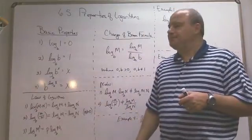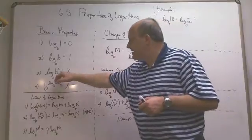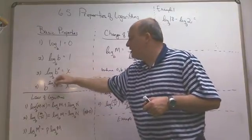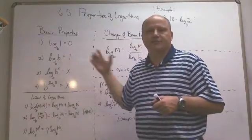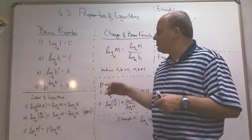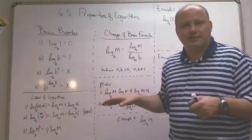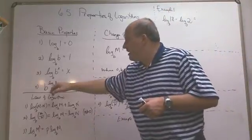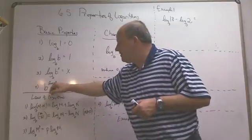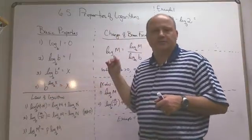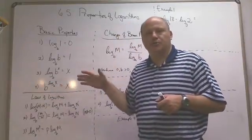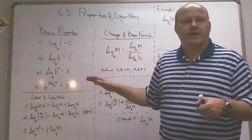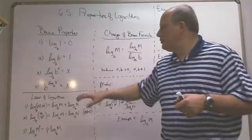The third basic property is log base B of B to the X equals X. Again, in exponential form, B to the X equals B to the X — obviously true. The next property is B raised to log base B of X equals X. This has to do with converting between exponential and logarithmic form, and it's pretty clear at that point, but takes a bit more space to show.